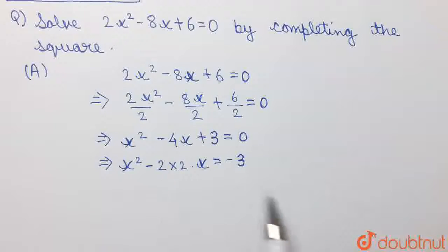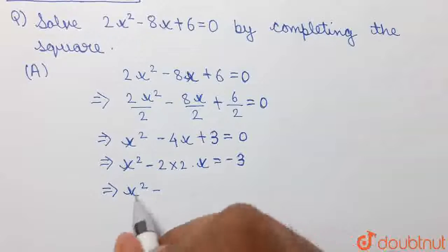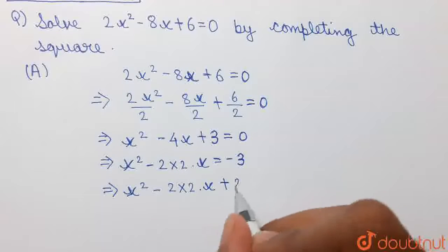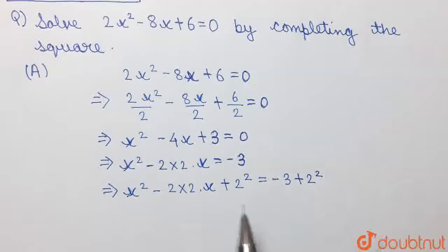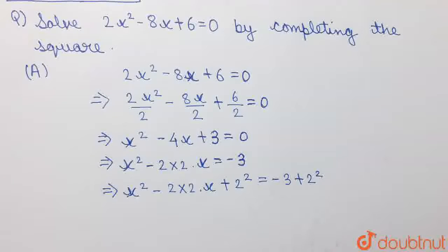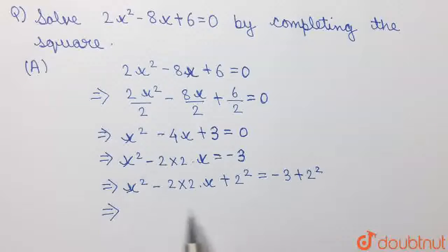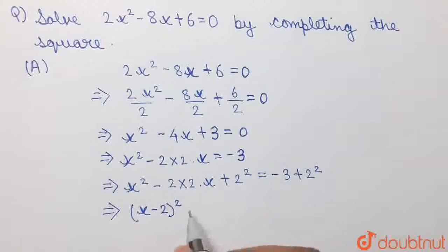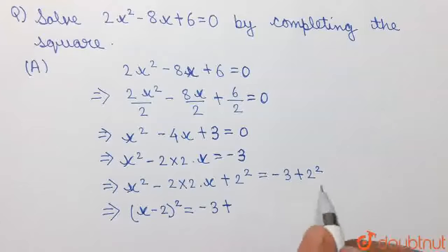x squared minus 2 into 2 into x plus 2 squared will become equal to x minus 2, whole squared. So, adding 2 squared to both sides of this equation, we have x squared minus 2 into 2 into x plus 2 squared is equal to minus 3 plus 2 squared. As we have added 2 squared to the left hand side, we have to add the same to the right hand side as well to keep the equation balanced.